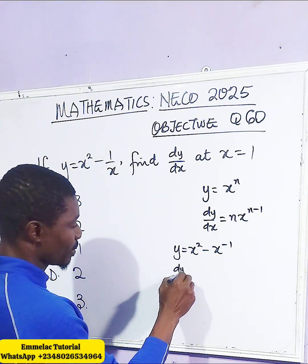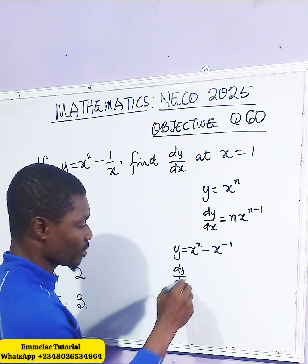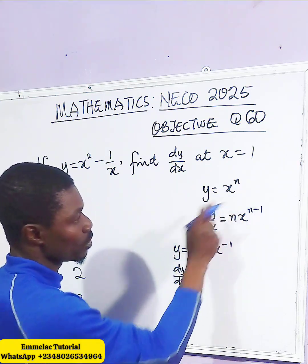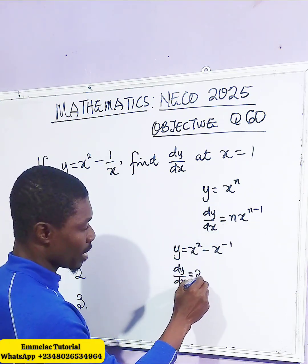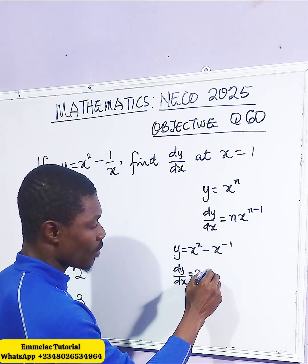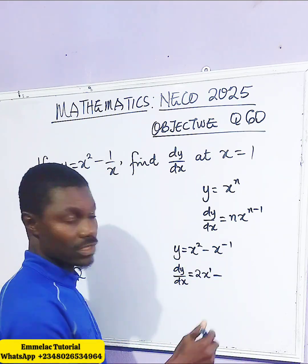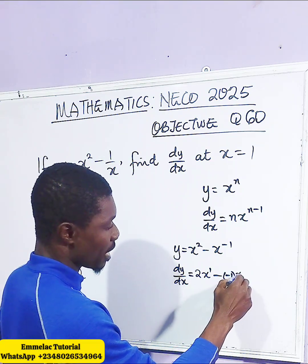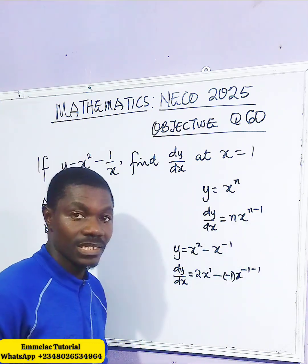Now, dy/dx means differentiating y with respect to x. This is a two-term expression, so we drop the power n as the coefficient. We drop our 2 here, then x to the power of 2 minus 1, which gives x to the power of 1. Then, for the second term, we drop negative 1 as the coefficient, then x raised to the power of negative 1 minus 1.